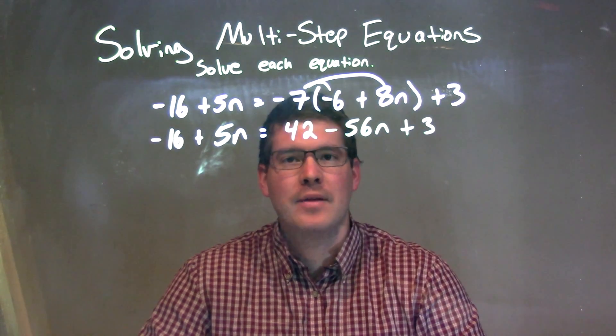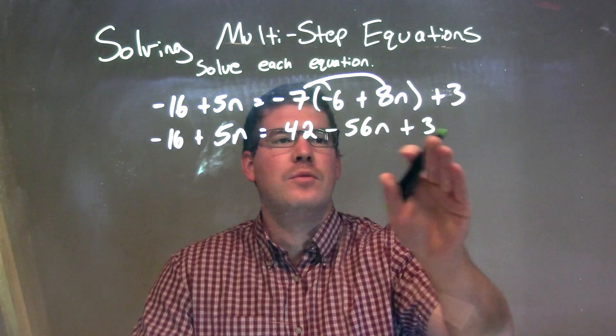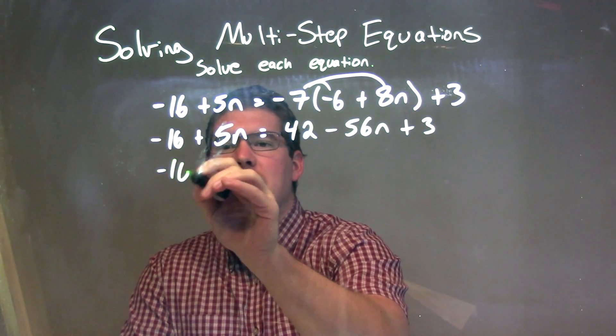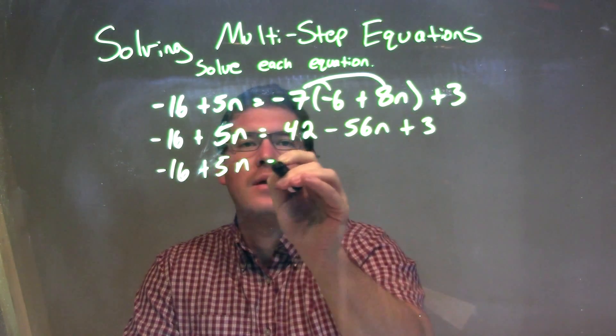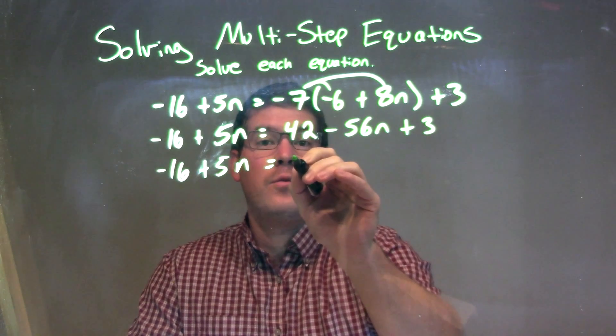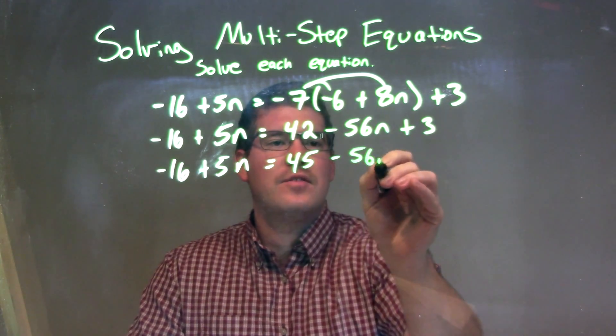From there, I can combine my like terms again on each side. 42 and 3 I'm going to combine. So we bring down negative 16 plus 5n, and 42 plus 3 is 45 minus 56n.